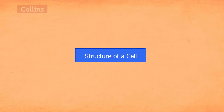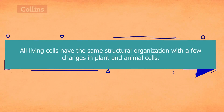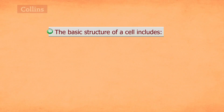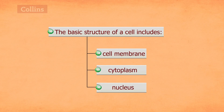Structure of a Cell. All living cells have the same structural organization with a few changes in plant and animal cells. The basic structure of a cell includes a cell membrane, cytoplasm, and nucleus.